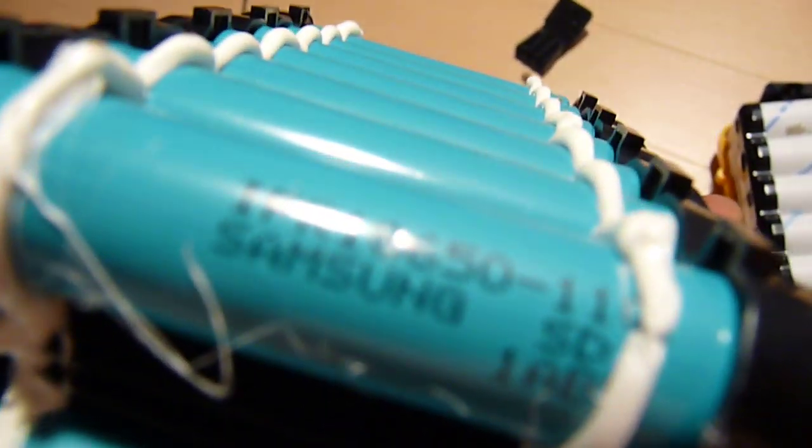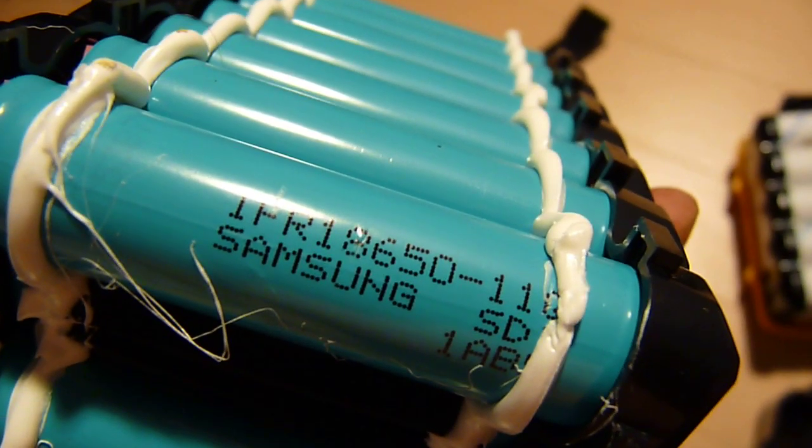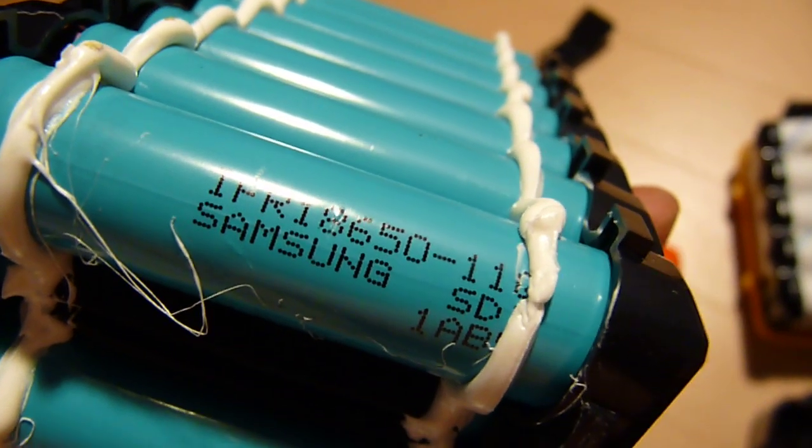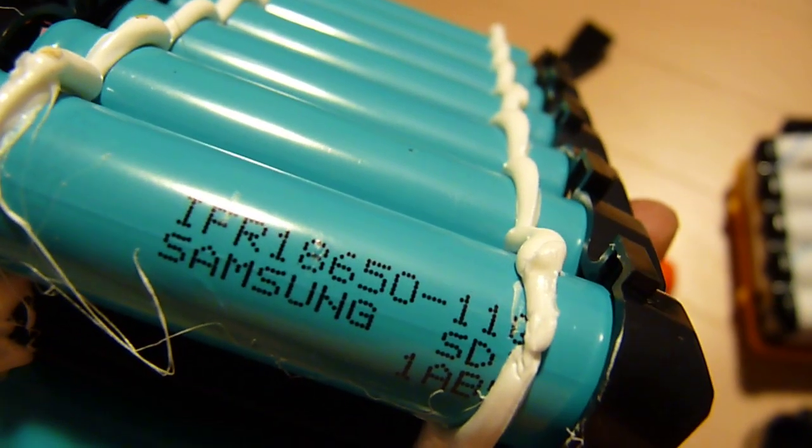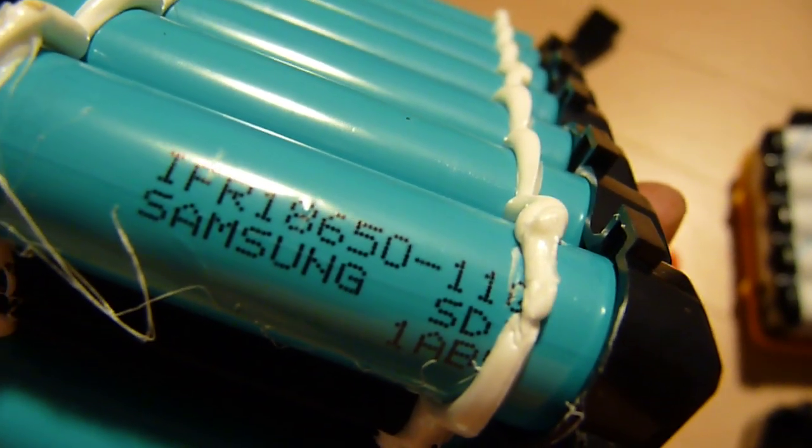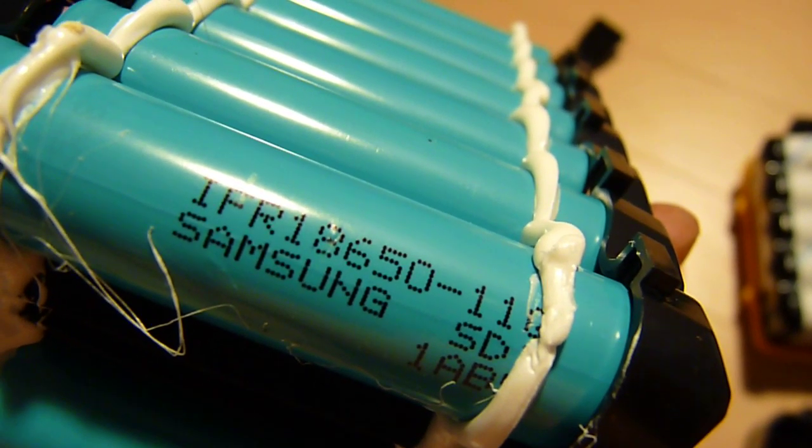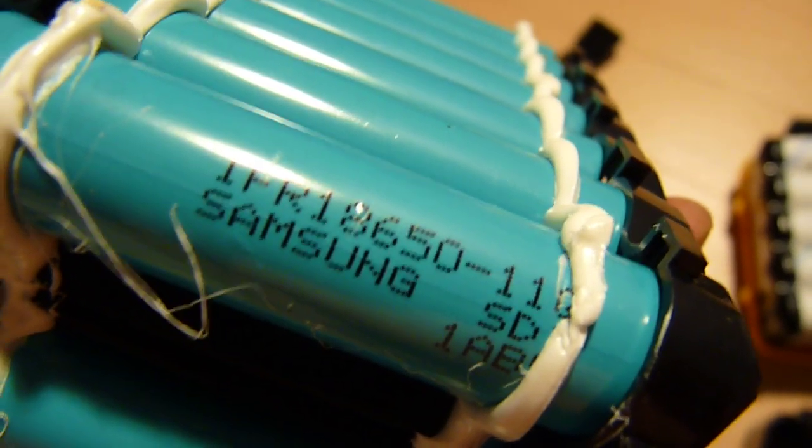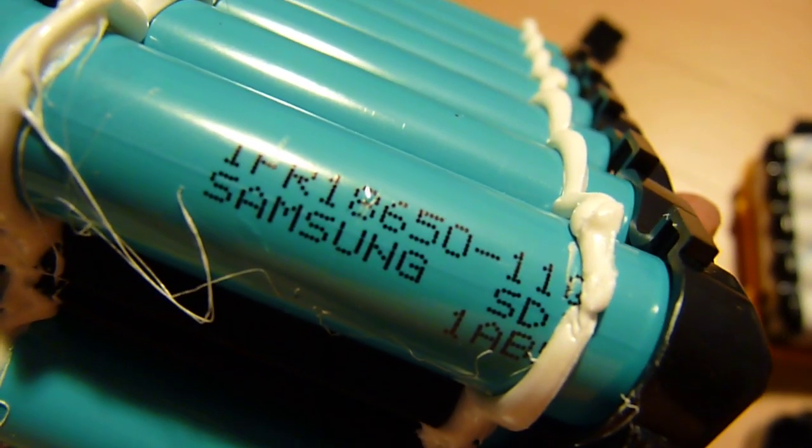And these are Samsung's IFR18650-11Q. There's another user on RC Groups forum who found one of those, and his cells are IFR18650-11P. I haven't found any datasheets for those, but there is very limited information about 11P on Samsung's website. It's SamsungSDI.com, I believe. And they are rated 1.1 amp hours per cell.